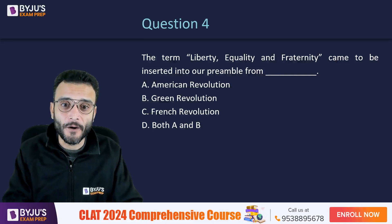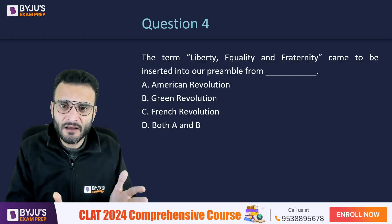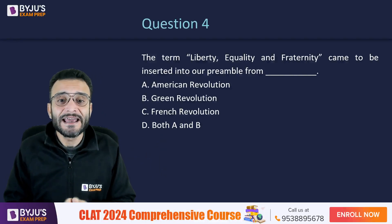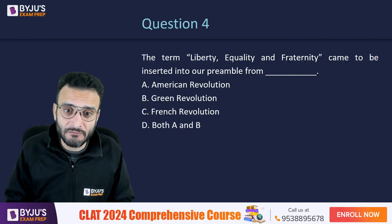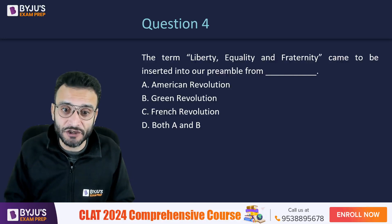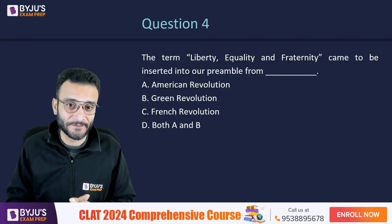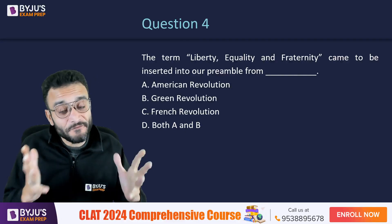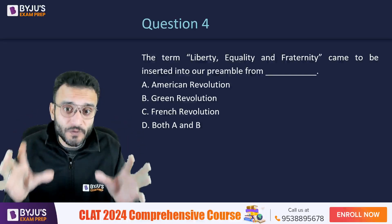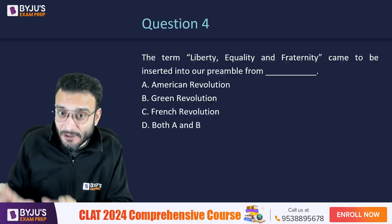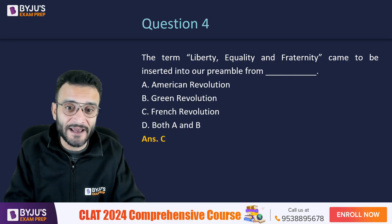Moving on to question number 4: the terms liberty, equality, and fraternity that you see in the Preamble of the Indian Constitution came from which of the following? Is it the American Revolution, the Green Revolution, the French Revolution, or both American Revolution and the Green Revolution? The correct answer is the French Revolution — option C.